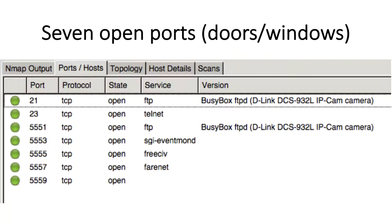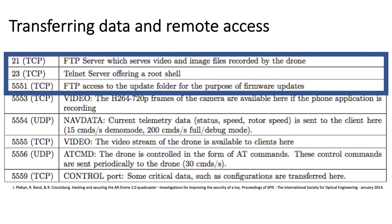Let's look back at what we found in the second video so everything in this video makes sense. We ran a network scan on the AR Drone and found that it had several open ports — port numbers 21 all the way through 5559 are all open ports. That means that the drone is listening for networking traffic to come across those ports. What are those ports listening for?